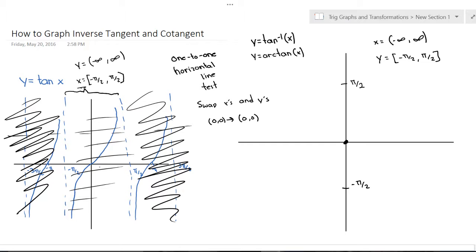And then, you know how the asymptotes were at x equals negative pi over 2 and x equals pi over 2? That's going to be the same thing here, except now they're going to be at the y values.